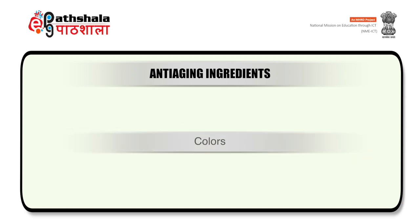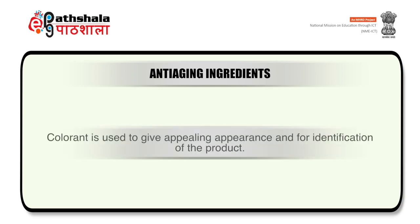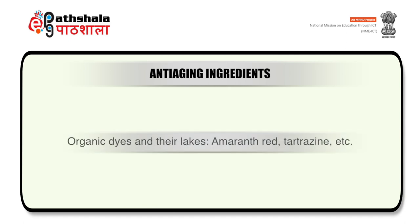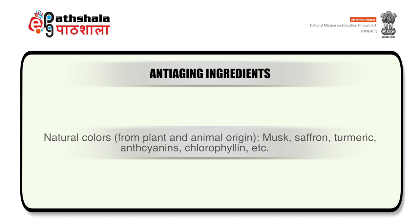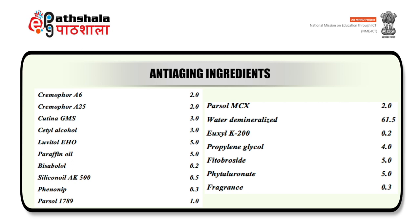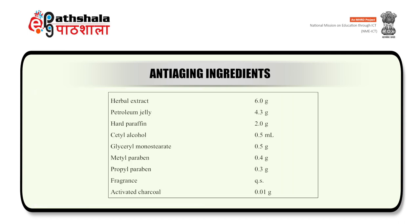The next type of excipients in anti-aging preparations are colorants. Colorants are used to give appealing appearance and for identification purpose. There are four classes: organic dyes and their lakes (examples amaranth red, tartrazine), inorganic or mineral colors (examples red iron oxide, titanium dioxide), natural colors from plant or animal origin (examples musk, saffron, turmeric, anthocyanins, chlorophyllin), and dyes — synthetic chemical compounds consisting of 80 to 93 percent pure colorant material exhibiting coloring action when solubilized in a particular solvent. On screen you can see the formula of anti-aging cream — both a synthetic type and an herbal type, which contains herbal extracts along with other excipients.